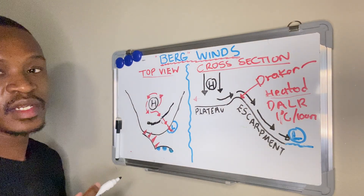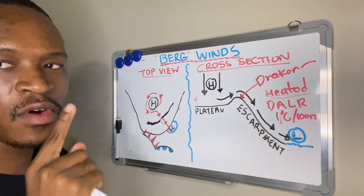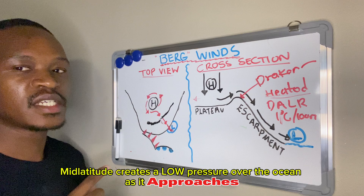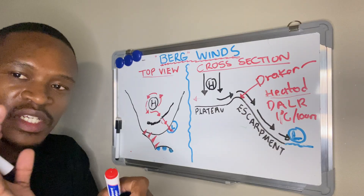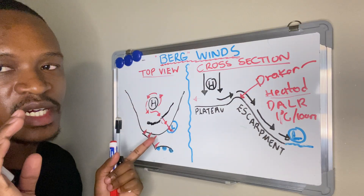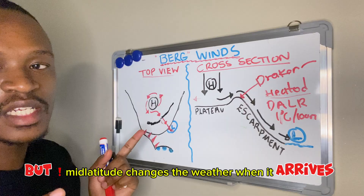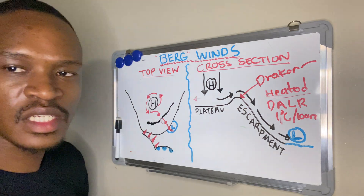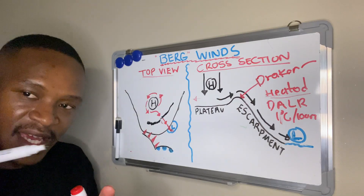Mid-latitude cyclones and berg winds are closely related. When a mid-latitude cyclone approaches, it creates a low pressure over the ocean, which provides the conditions necessary for berg winds — we need a high pressure over the land and a low pressure over the ocean. Winds blow from the high pressure towards that low pressure.